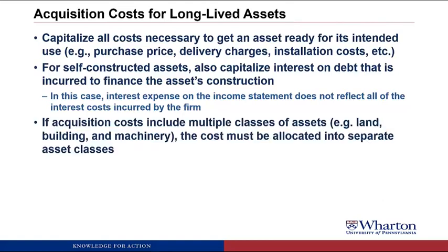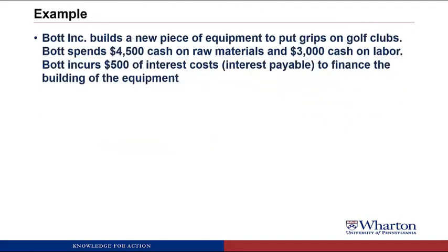One more point with acquisition costs: if the costs include multiple classes of assets — let's say you buy land, building, and machinery with all one purchase price — the cost has to be allocated into the separate asset classes. We saw this back in the RelicSpotter case where Rebecca Park bought land and building for $155,000 and had to allocate that into land versus building, and the reason was because they had different depreciation rates over time, with land not being depreciated.